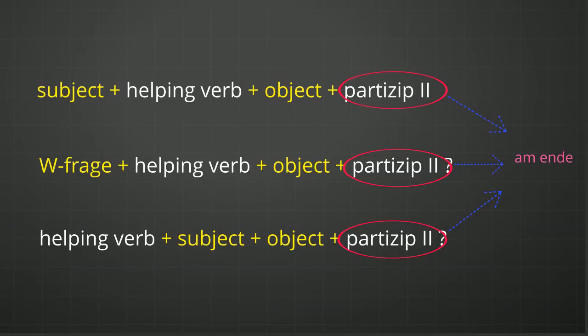Then after that, if you have an object in the sentence, you can write the object. And at the end of the sentence, you have to write the Partizip II form of the verb. This helping verb will depend on your Partizip II verb. If you are writing a W-Frage, the first position will be the W-Frage word. Second position will be the helping verb in conjugated form. Then if you have an object, you can write it after your helping verb, and at the end of the sentence you write the Partizip II form.